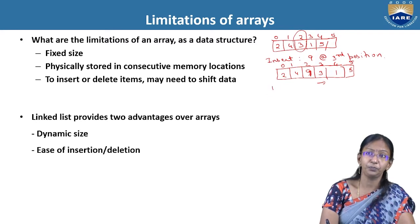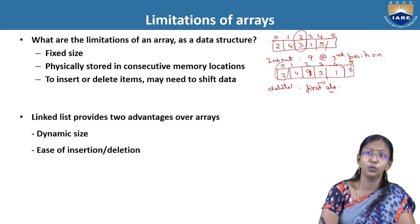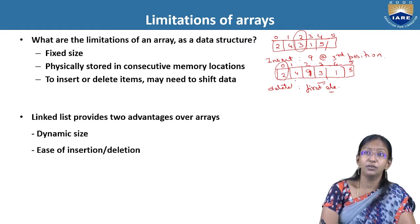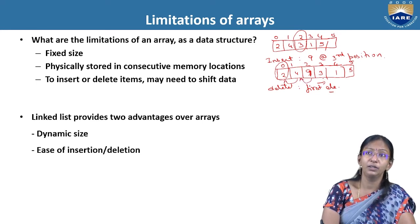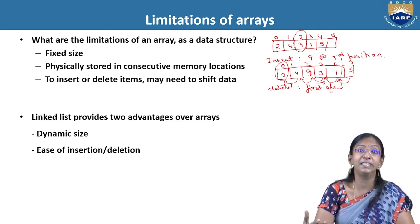Coming to deletion — say we want to delete the first element from the array 2, 4, 9, 3, 1, 5. We must overwrite: 4 overwrites 2, 9 overwrites 4, 3 overwrites 9, 1 overwrites 3, 5 overwrites 1, and then we reduce the size of the list. These many steps are involved in deleting an element from an array. To overcome this, linked list was introduced.